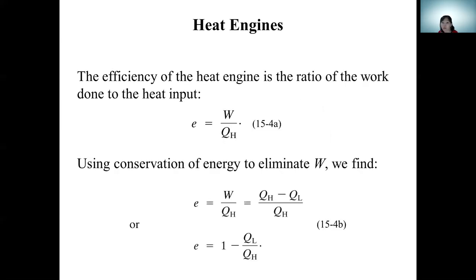The efficiency of a heat engine equals the ratio of the work done by the system to the heat given by the hot reservoir: efficiency e equals W divided by Q_H. Alternatively, efficiency equals one minus Q_L over Q_H, where Q_L is the heat given to the cold reservoir (condenser) and Q_H is the heat taken from the hot reservoir.